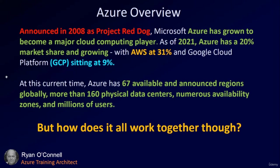Announced in 2008 as Project Red Dog, Microsoft has grown to become a major cloud computing player. As of 2021, Azure has 20% of the market share and growing, with AWS at 31% and Google Cloud Platform at 9%. Azure currently has 67 available and announced regions globally, more than 160 physical data centers, numerous availability zones, and millions of users.